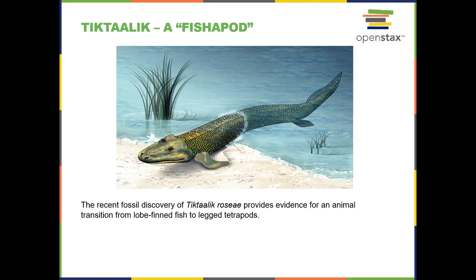The transition in evolutionary terms between fish and the first amphibians includes a pretty good number of species that we know about. We actually have skeletons and fossils of a pretty good number of species that we believe represent the transition between fish and tetrapods, and one of the species that was really a key discovery.